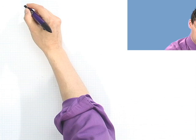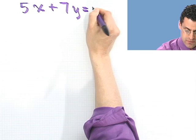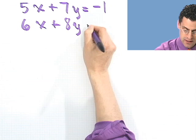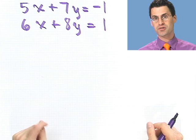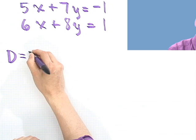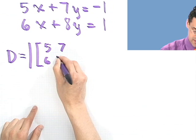So let's use Kramer's rule to solve the following: 5x plus 7y equals minus 1, and 6x plus 8y equals 1. Now, you can use a substitution method, an elimination method, or all these other methods we talked about, but let's use Kramer's rule and see what happens. So I have to compute a few things. First, I'll compute the determinant D. That's the determinant of just the coefficients. So 5, 7, 6, 8.